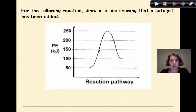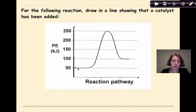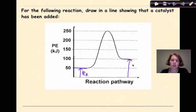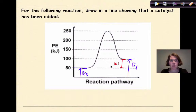For the following reaction, draw in a line showing that a catalyst has been added. Initially, right at the beginning of our reaction, we have the potential energy of our reactants. At the end of the reaction we have the potential energy of our products. The difference between these two is our delta H — the heat of the reaction — and that can't be touched by a catalyst.